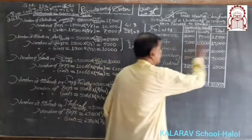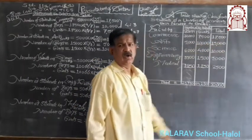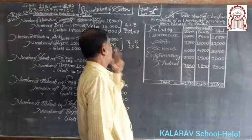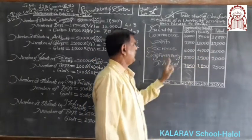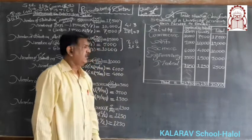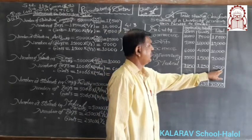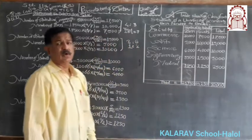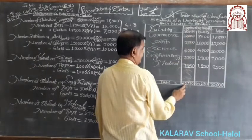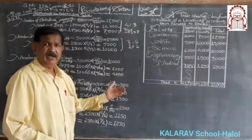Calculate the horizontal total and vertical total. In commerce total is 17,500; in arts total is 15,000; in science total is 10,000; in engineering total is 5,000; and in medical science the total number of students is 2,500 — with 1,250 boys and 1,250 girls. Total number of boys in the university is 25,750 and total number of girls is 24,250.